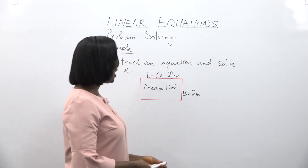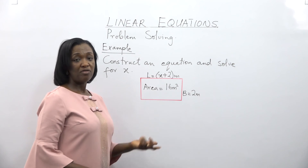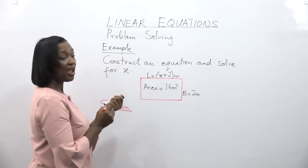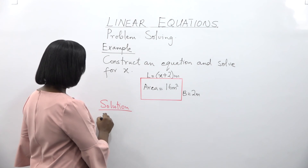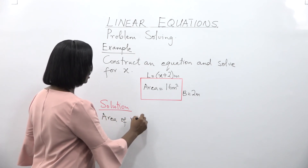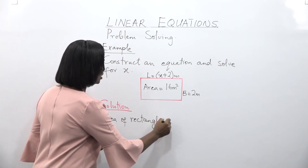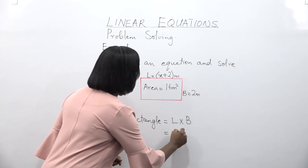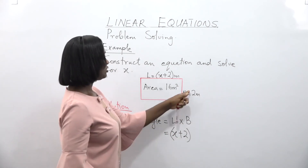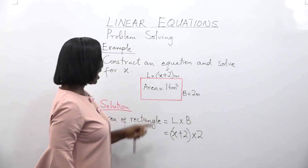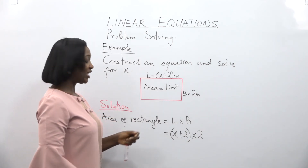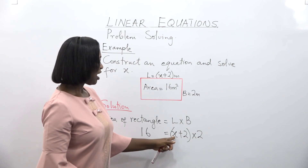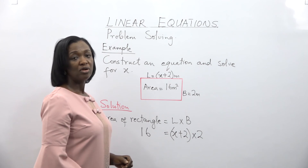The area of this rectangle is 16 meters squared. We are supposed to find the value of x. The first step is to find the formula for the area of a rectangle. Area of a rectangle is equal to length times breadth. Our length is x plus 2, so we have (x plus 2) times 2, and that area is equal to 16 meters squared. So the equation we construct is: 16 is equal to (x plus 2) times 2.